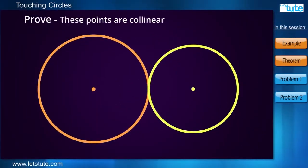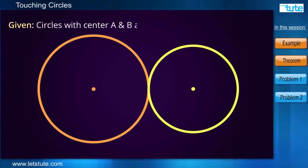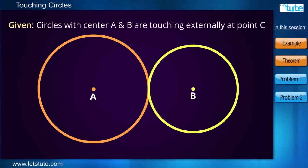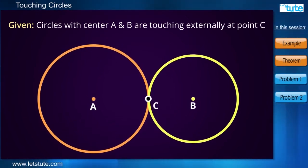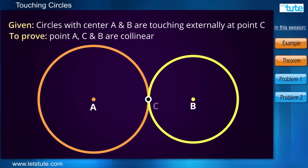Now what we need to prove is that the radius of both the circles and the point at which the circles intersect are in the same line, that is they are collinear. So let's consider two circles with center A and B touching at a common point C. So here we need to prove that the point C lies on the line AB.